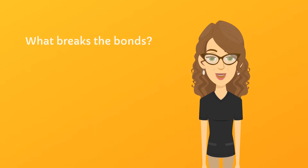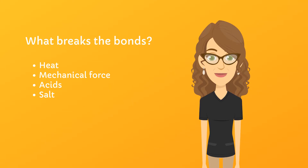Once you've got all the strands where you want them, press the points of contact to create the new bonds. You may be wondering what breaks the internal bonds so the process can begin. Proteins can be denatured by heat, mechanical force, acids, or salt. We'll start off by focusing on the heat process, which of course is cooking.